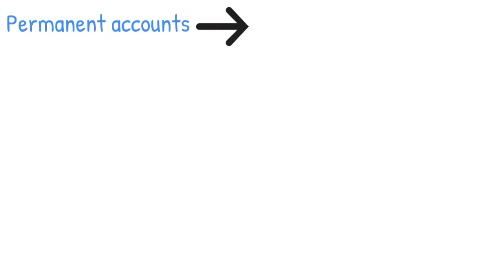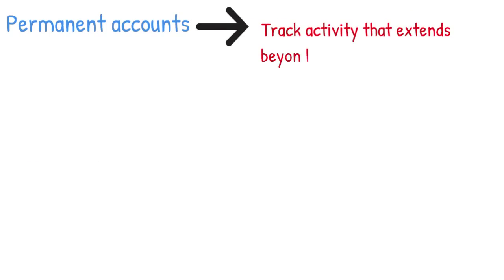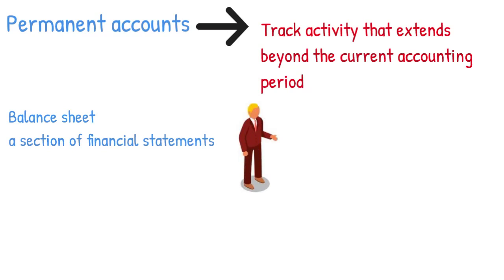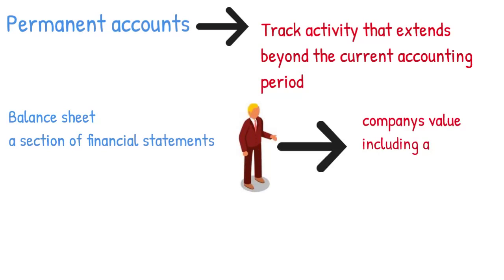Permanent accounts, on the other hand, track activities that extend beyond the current accounting period. They are housed on the balance sheet, a section of financial statements that gives investors an indication of a company's value, including what assets and liabilities it has.